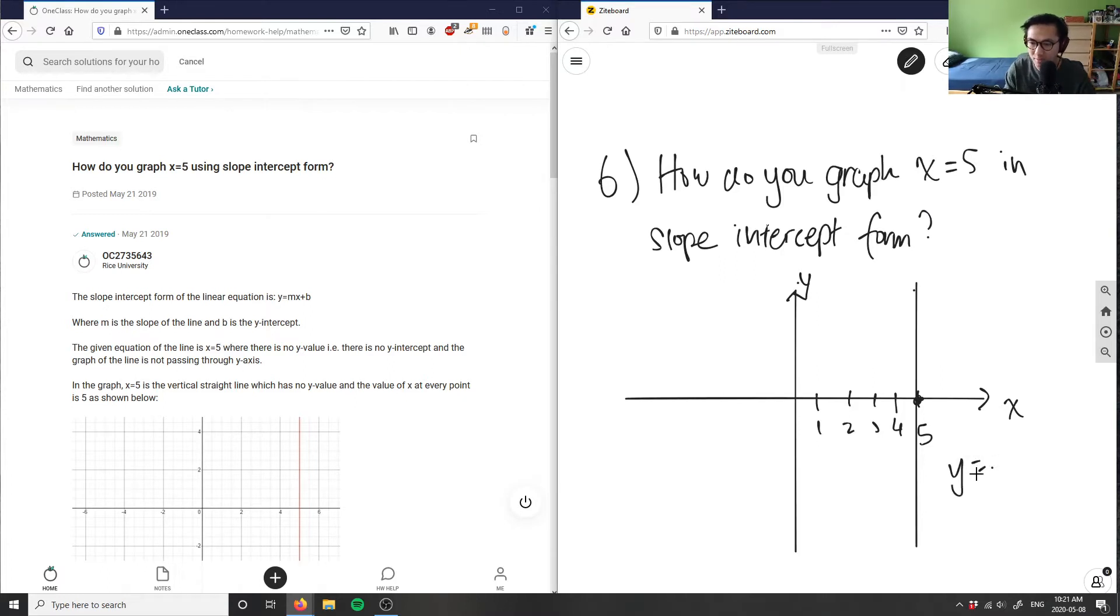And we know that this exists because at every point x is going to equal five. Then y value does not matter. There's no y value here, right? Again, this is just simply one variable, and I have it's just simply x equals five.